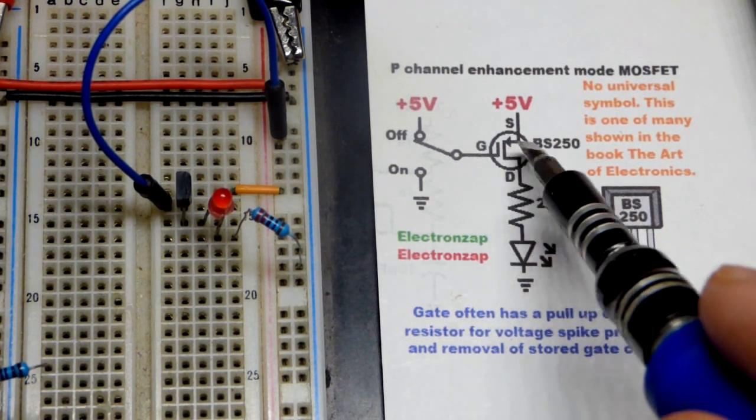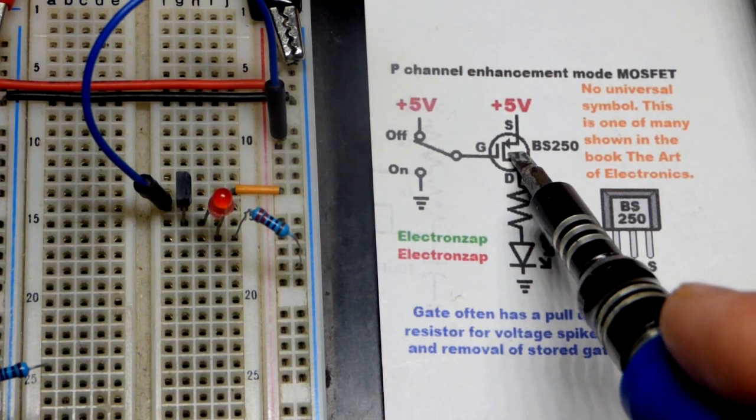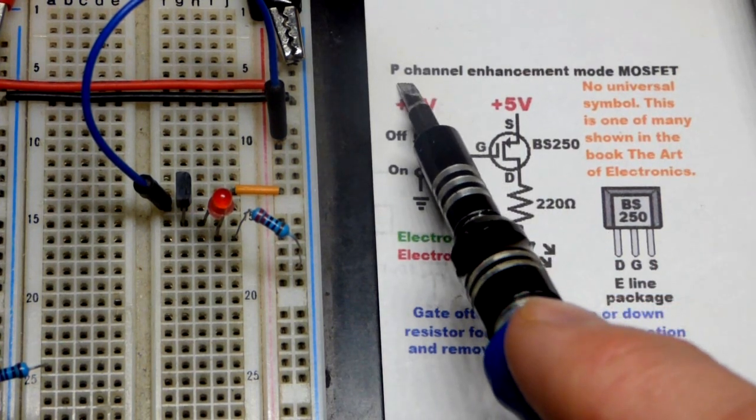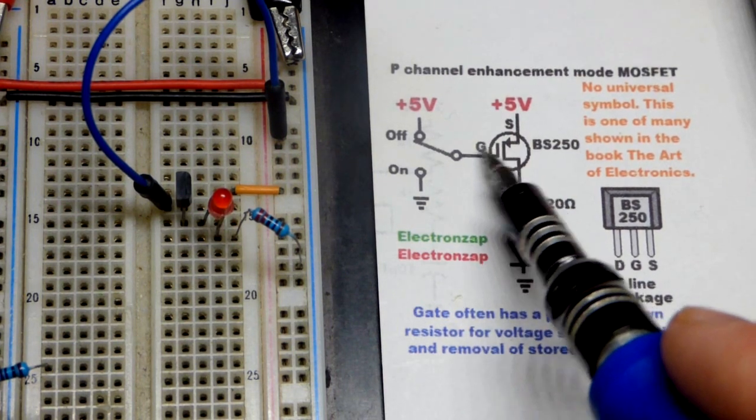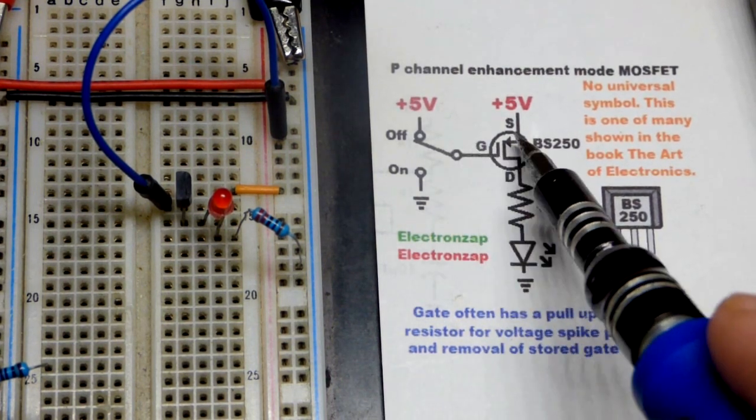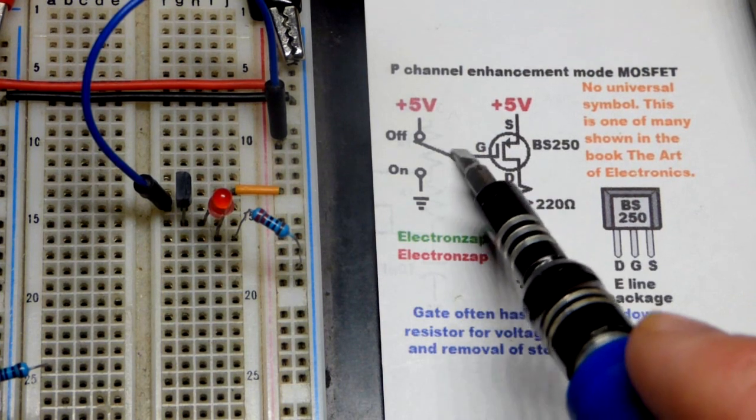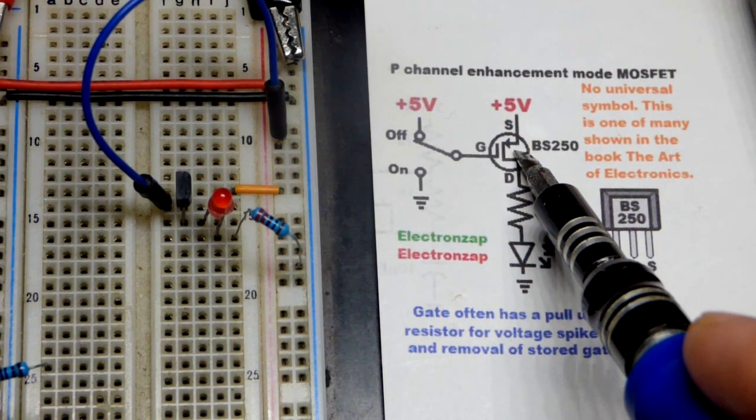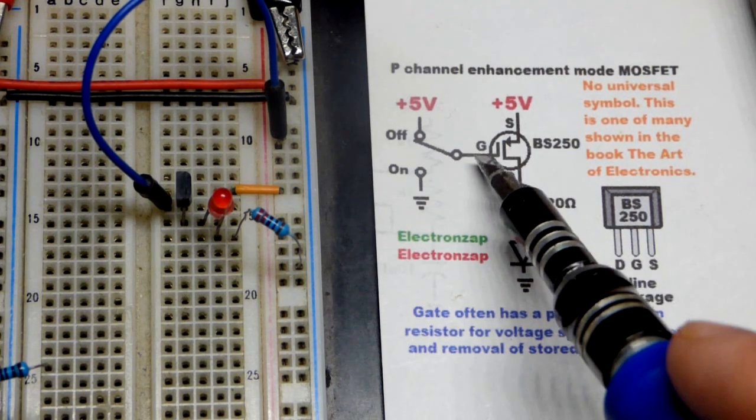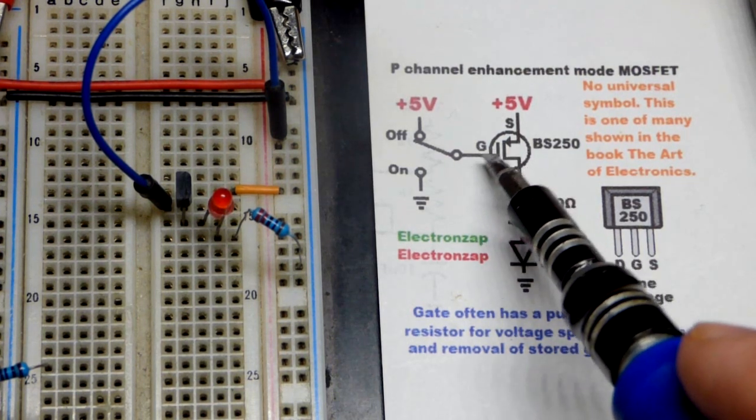But it just takes a small charge to change the channel. So this is P-channel. We got the gate there. It's kind of like a capacitor. When you get the gate more positive, the channel becomes more negative. When you get the gate more negative, the channel gets more positive, and there's some current moving because it's like a capacitor.